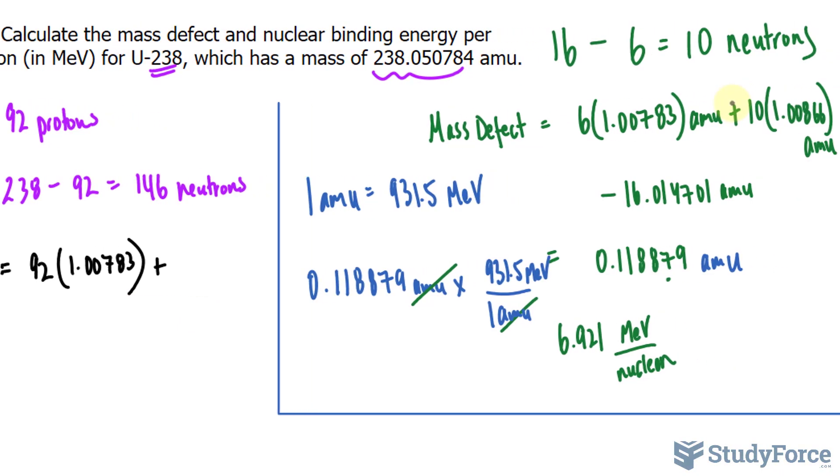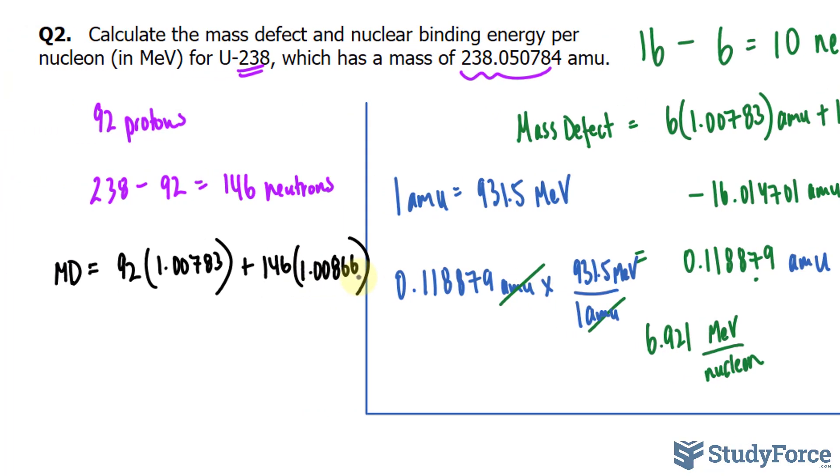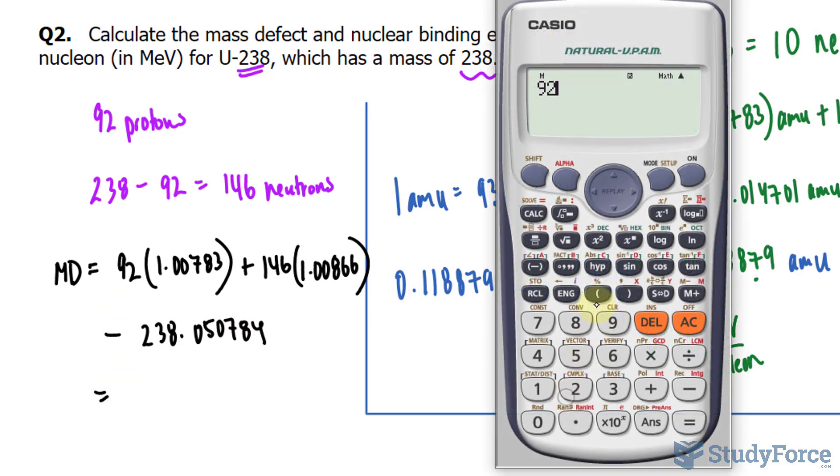So now we will add the mass of all the neutrons. And as calculated, it's 146 neutrons times the mass of one neutron being 1.00866. These two will be summed up, and we'll subtract from these this value. Now remember, after you've done this calculation, the units are an AMU. So let me show you.